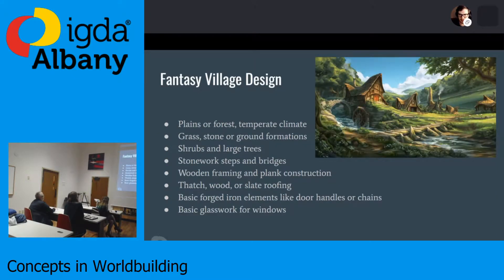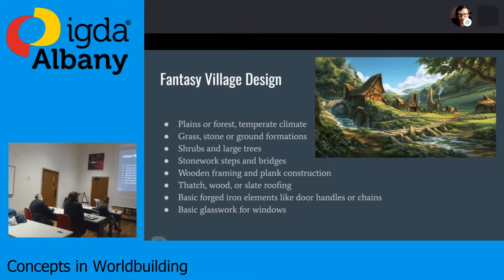Here we have more or less a checklist of what I consider pretty standard in a fantasy village: plains, grass, stone formations, tall trees, underbrush, maybe some flowers, wooden framing, plant construction — these are very widely used themes in what you would call standard fantasy. Now let's think about what might be different about this village if it were located somewhere that these materials were not available.